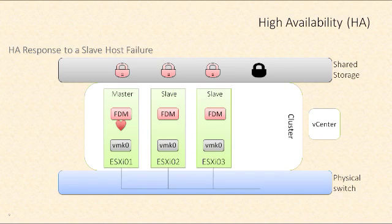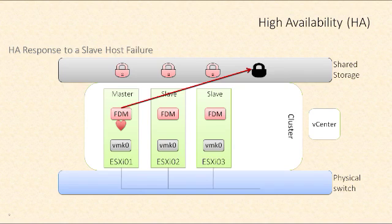The master will try to ping the host and determine it can't ping ESXi 04. So then the master will check on the datastore heartbeat of host ESXi 04 and realize that the lock file is now unlocked. And that means that that host must be down.